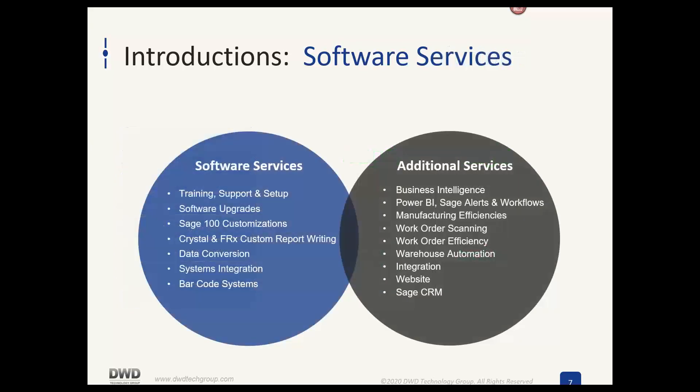Our primary products are virtually all Sage-related: Sage 100 is our flagship product. We also work with Sage Intacct, Sage BusinessWorks, Sage 50 (formerly Peachtree), MIP Fund Accounting, Fixed Assets, HRMS, and Sage CRM. Our software services include training, support, setup, troubleshooting, upgrades, customizations, custom report writing, data conversions, integrations, business intelligence reporting, manufacturing functionality, warehouse automation, and external system integrations.